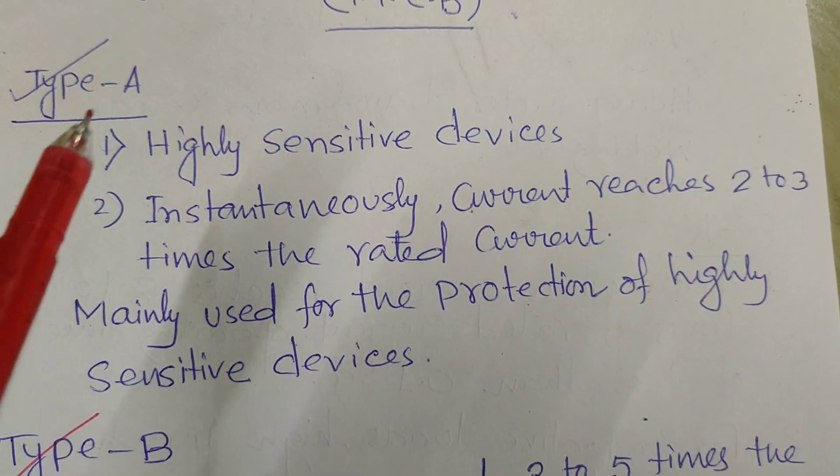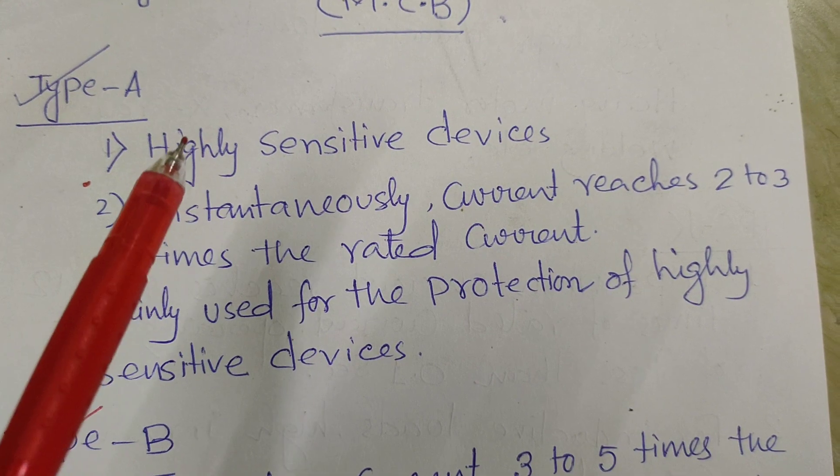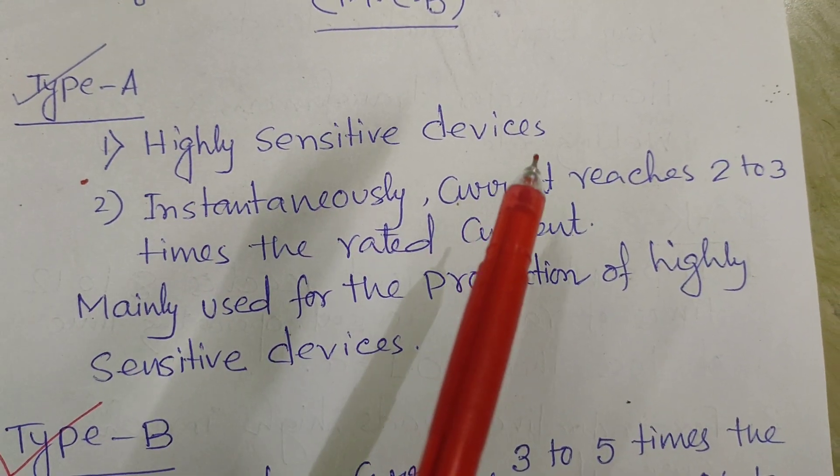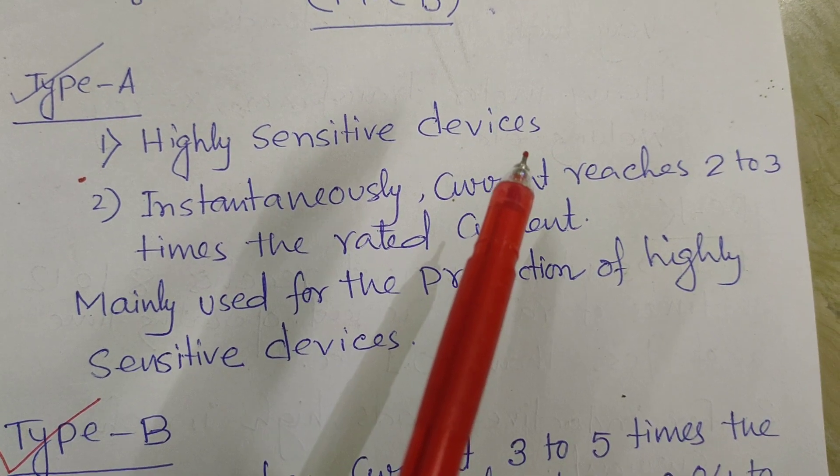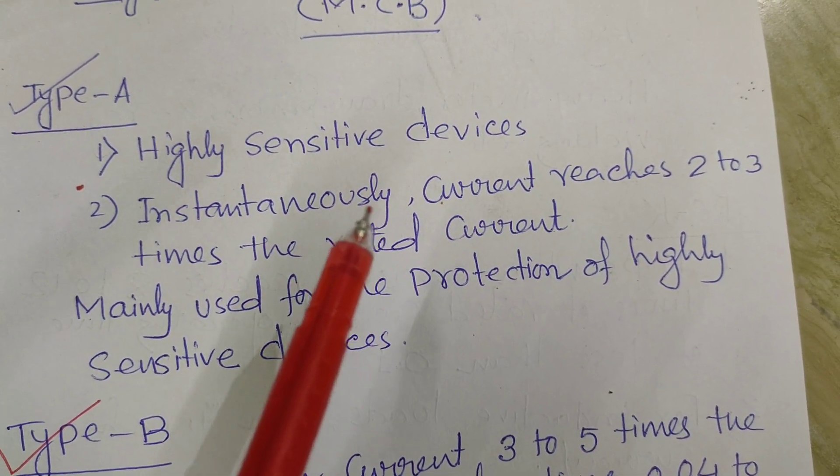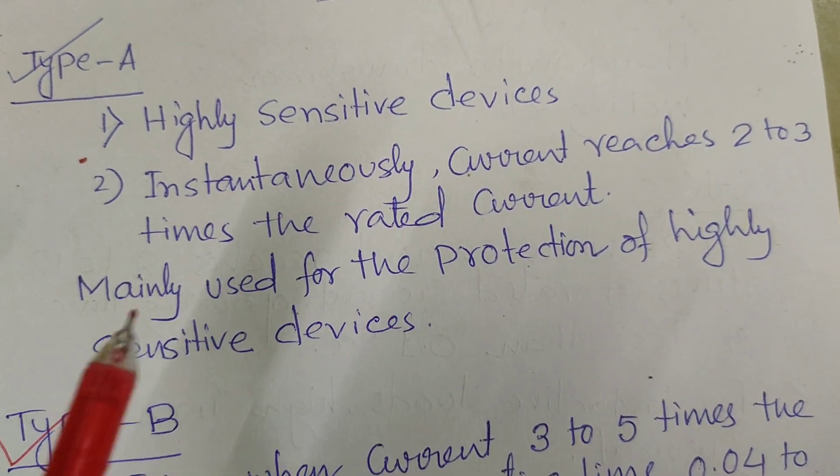Let's discuss about the A-type. Advantage and disadvantages. It is highly sensitive. It is being used for the highly sensitive device. Instantaneous current reaches 2 to 3 times the rated current, mainly used for protection of highly sensitive device.